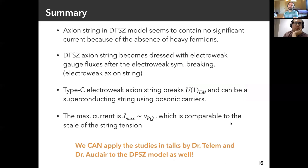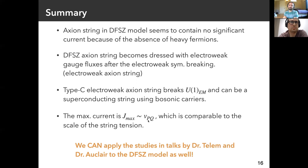Let me summarize. The axion string in the DFSZ model seems to contain no significant current because of the absence of very heavy fermions. The DFSZ axion string becomes dressed with electroweak gauge fluxes after electroweak symmetry breaking, which we call electroweak axion strings. The type C string breaks the U(1) EM symmetry inside the string and can be a superconducting string using bosonic carriers. The maximum amount of current is roughly equal to the Peccei-Quinn scale, which is comparable to the scale of the string tension. So we can apply the studies by Dr. Thaym and Dr. Kurea to the DFSZ model as well. Thank you very much.